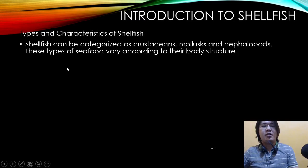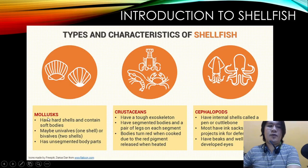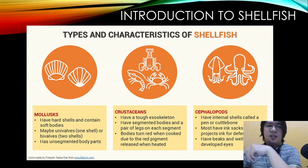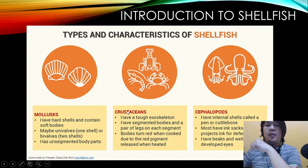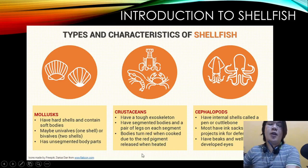The types and characteristics of shellfish: shellfish can be categorized as crustaceans, mollusks, and cephalopods, varying according to their body structure. Mollusks have a hard shell containing a soft body, which may be bivalve — having two shells — or univalve, having only one shell, with an unsegmented body. Crustaceans have a tough exoskeleton, segmented bodies, and a pair of legs on each segment. Their bodies turn red when cooked due to red pigment released by heat.